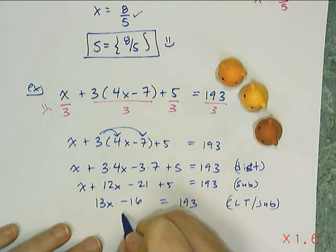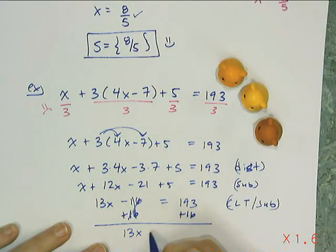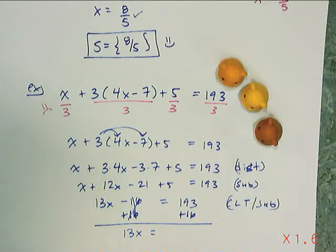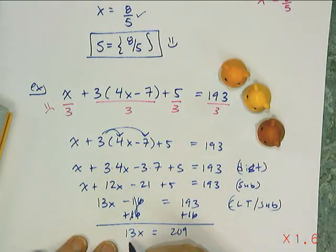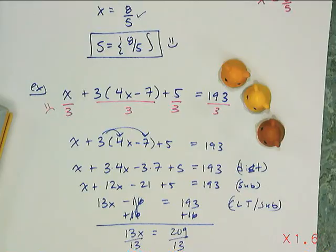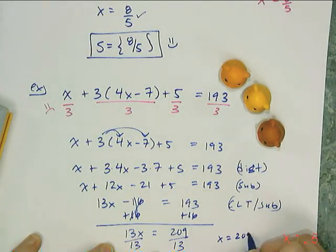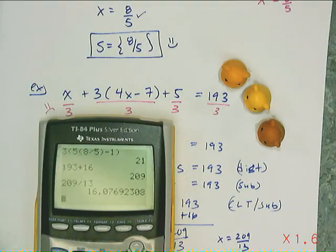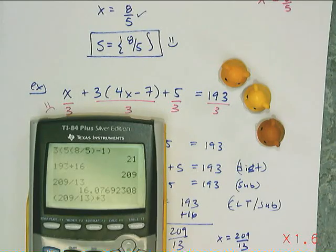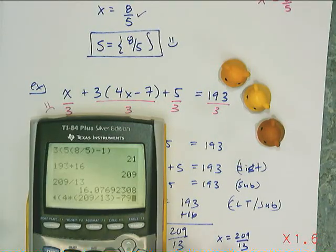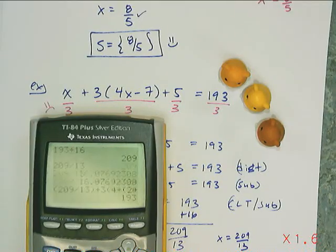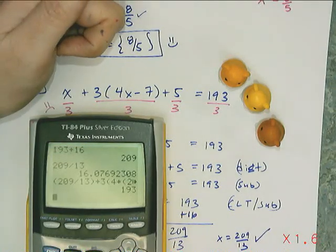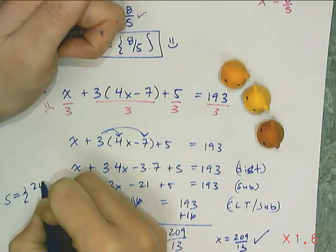Now I have a two-step equation. I add 16 strategically to get 13x equals 209. Then I divide both sides by 13. It doesn't divide evenly, so x equals 209 over 13. I verify by substituting back: x plus 3 times (4 times 209/13 minus 7) plus 5 equals 193 — and it does. So my solution is indeed 209 over 13.